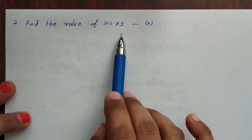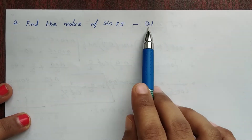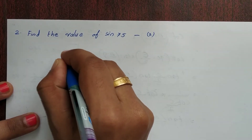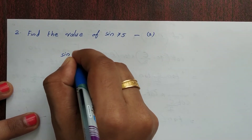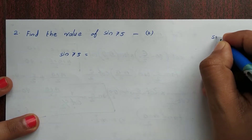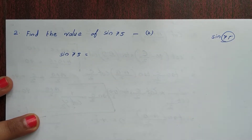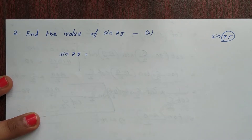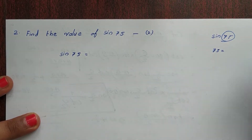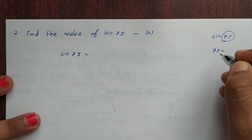Second question: find the value of sin75. This carries two marks. Since 75 is not a standard angle, we need to write it as a sum of two standard angles.